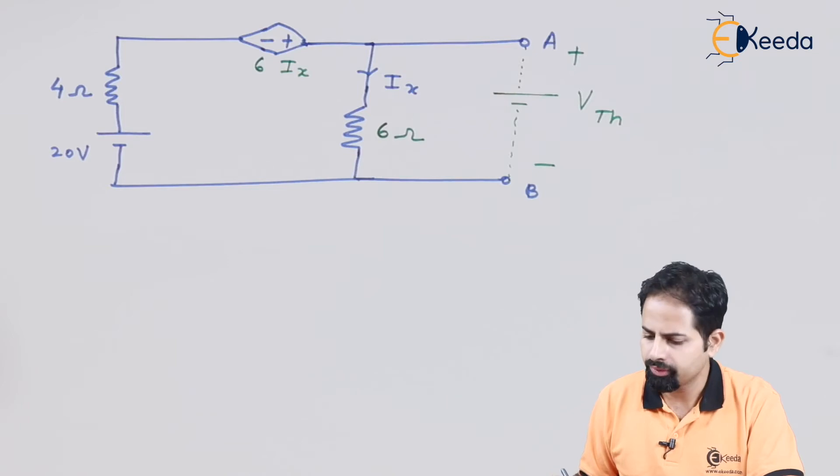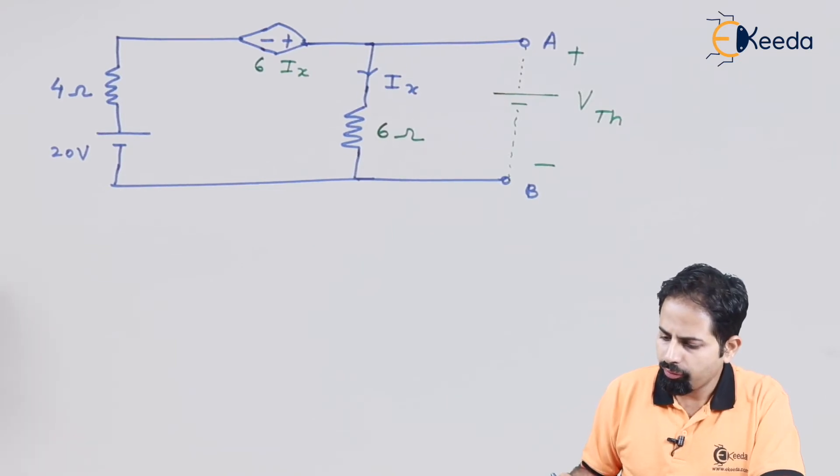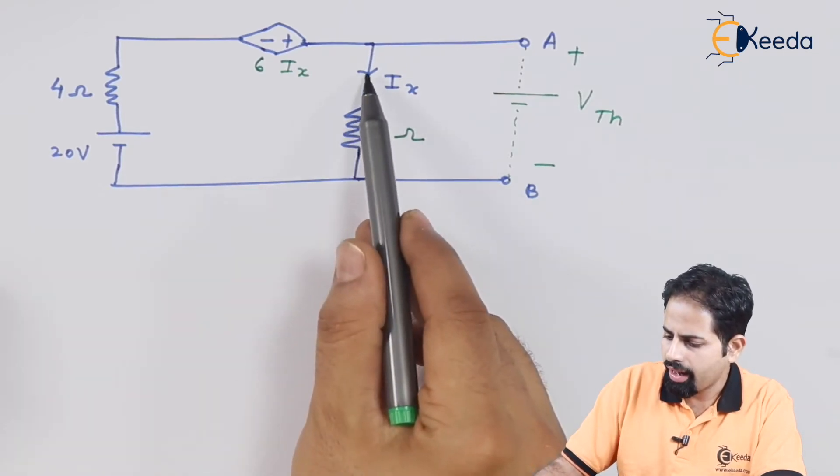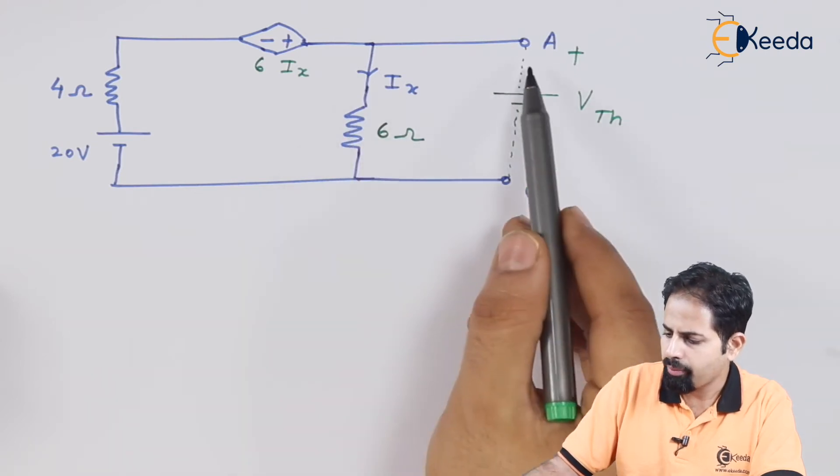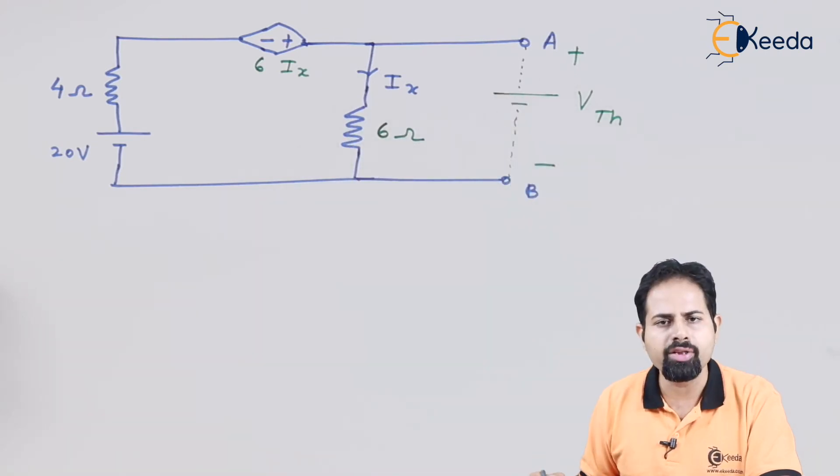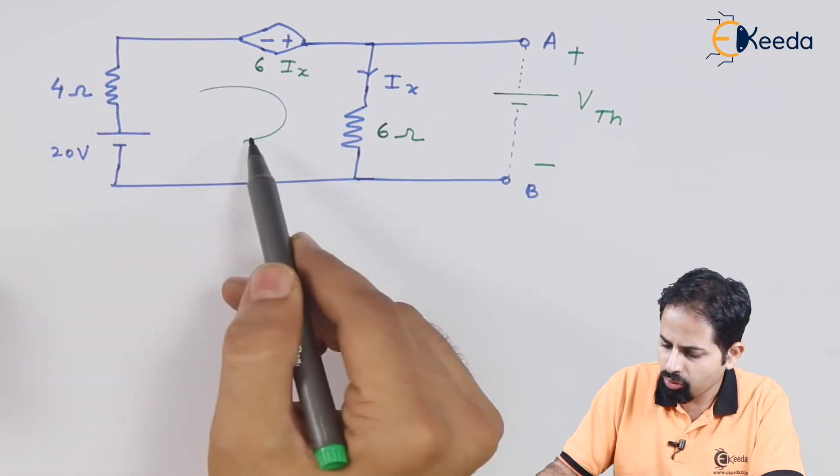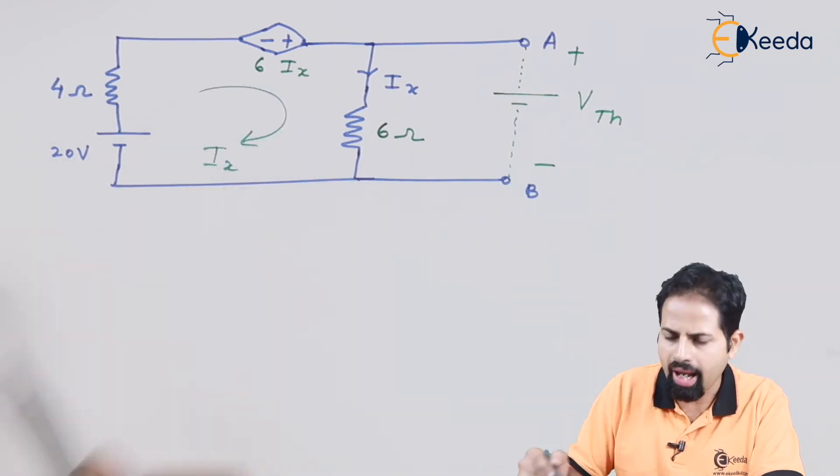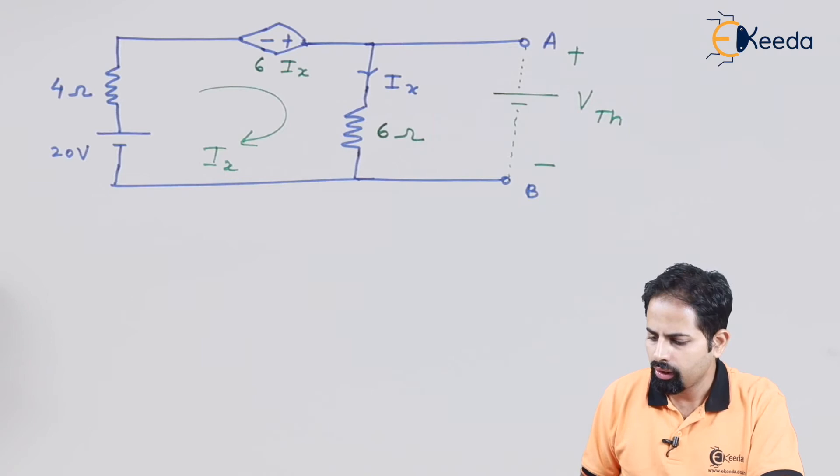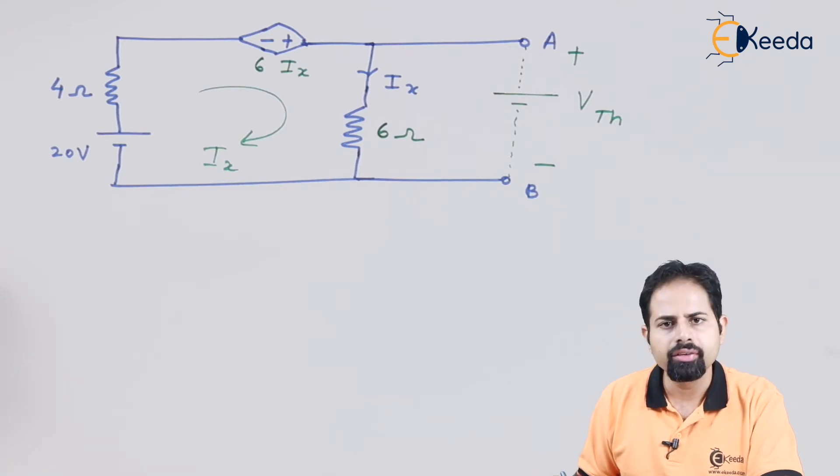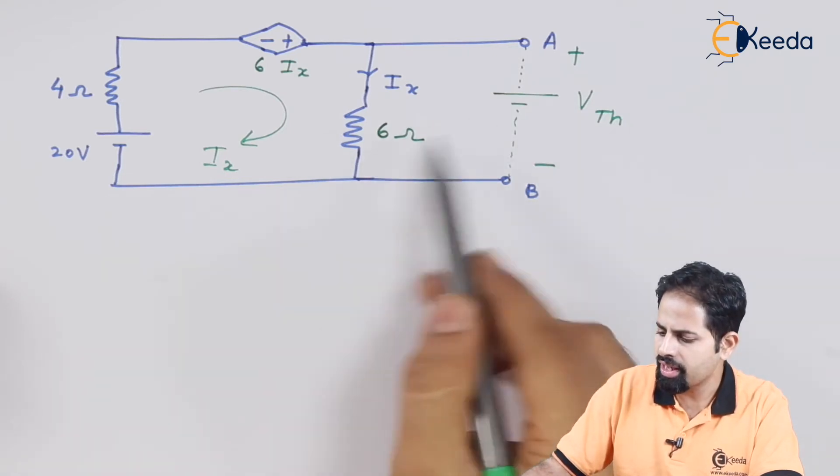These are the polarities. And now what we will do, see there is a current Ix which is going here. And because this is open circuit between terminals A and B, the total current through this circuit itself is going to be Ix. So let us find that current first, and then we will be easily able to calculate Vth.